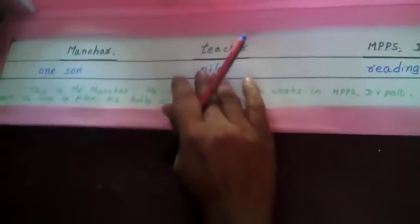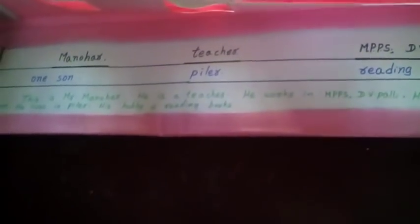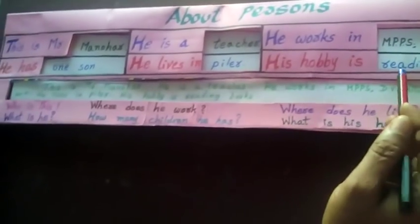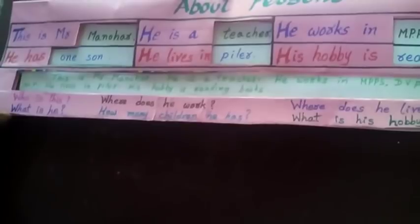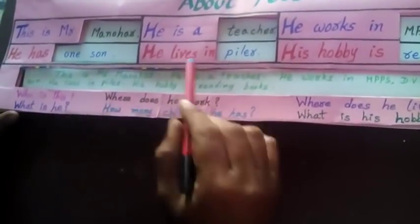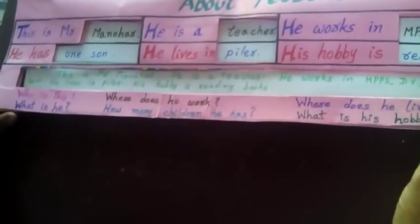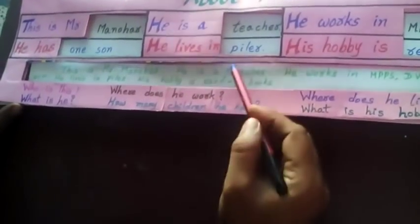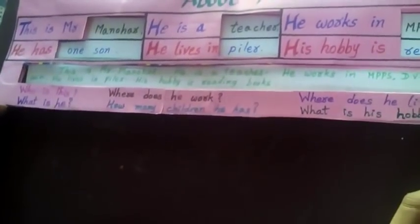Skip one by one card — children can read about more persons. The above information is shown in a paragraph. This is used as a comprehension. Read the comprehension and answer the questions below.